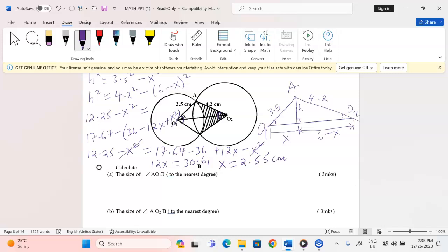Now that the value of X is 2.55 centimeters, the remaining part in this triangle, from this point up to the center, we can call this point M. So from M to O2, that remaining portion becomes, when we take 6 minus 2.55, this gives us 3.45 centimeters.